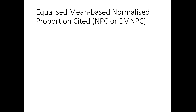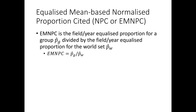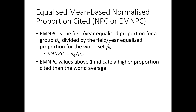We've looked at the sample-size-equalized proportion cited, and we're going to use a variant of that: the Equalized Mean-Based Normalized Proportion Cited — NPC or EMNPC. This is the field-year-equalized proportion for a group divided by the field-year-equalized proportion for the world set. A score above one means better than the world average; below one means lower than the world average.